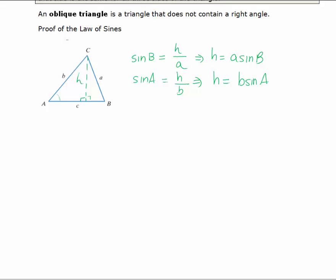Since h equals h, that means a sine B also has to equal b sine A. So I'll start by writing that down. I've got a sine B must equal b sine A.